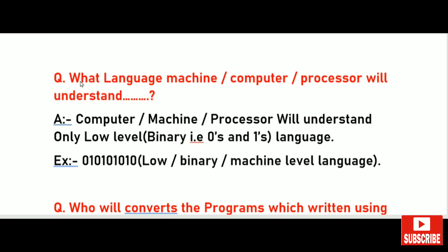First, let me explain what language a machine, computer, or processor will understand. A computer or machine or processor will understand only low-level language — that is binary language. Binary language is zeros and ones, or machine language. For example: zero, one, zero, one, zero.